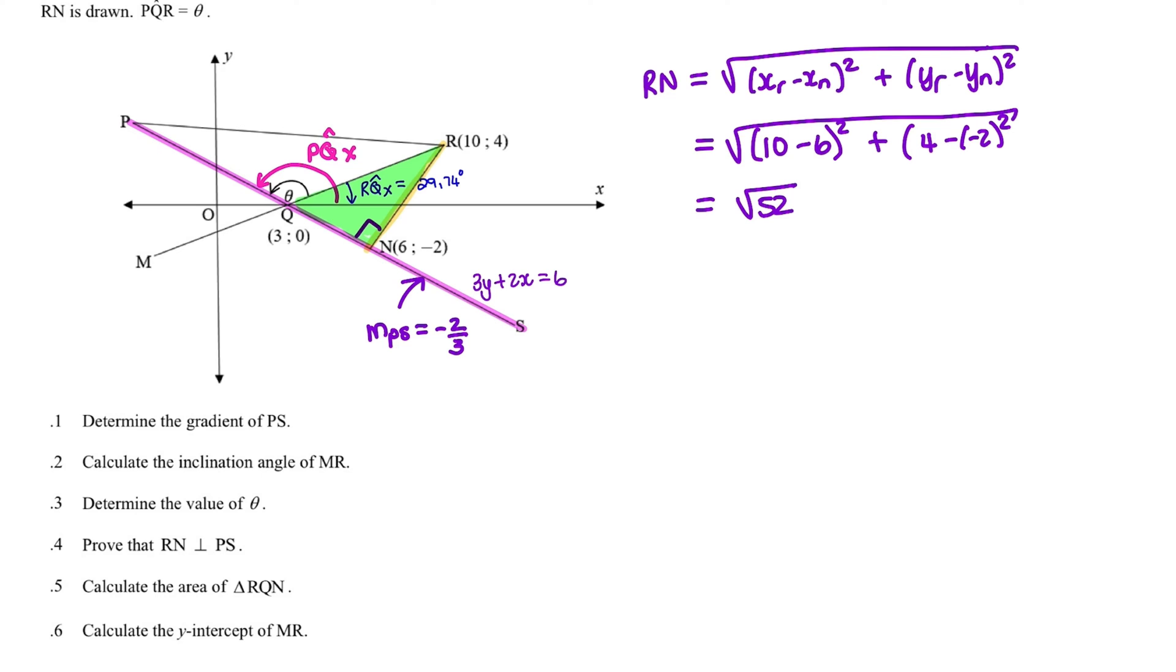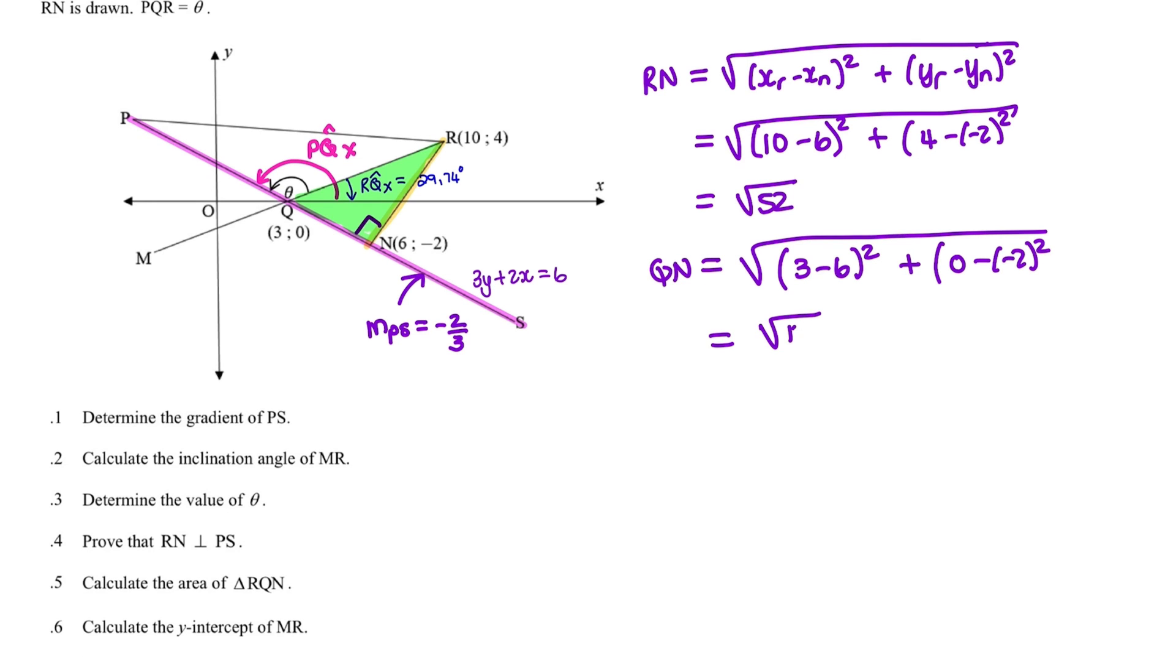Now we need the length of QN. So again, I'll use the distance formula. And when I substitute, I have 3 minus 6 squared. That's the difference of X's plus the difference of Y's, which is 0 minus minus 2 squared. And that simplifies to the square root of 13.